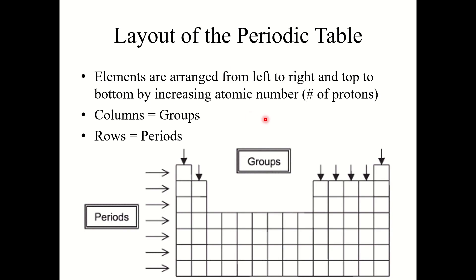The layout of the periodic table is as such. Elements are arranged from left to right and top to bottom by increasing atomic number — number of protons. When I use the word group, I'm referring to a column, so groups are columns. And if I use the word period, I'm referring to a row. So groups are the columns and periods are the rows.